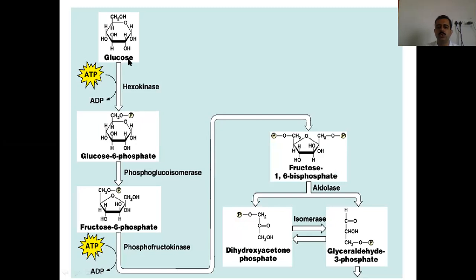Glucose is a six-carbon molecule. It gets converted into glucose-6-phosphate with the help of ATP — ATP donates its phosphate group at this junction. With the help of the enzyme hexokinase, this conversion is possible. So glucose gets converted into glucose-6-phosphate with the help of enzyme hexokinase.